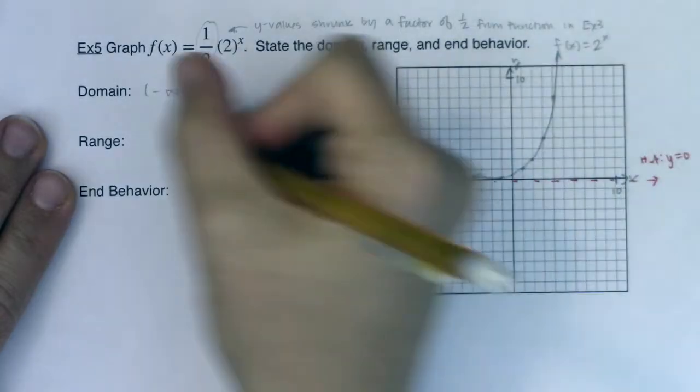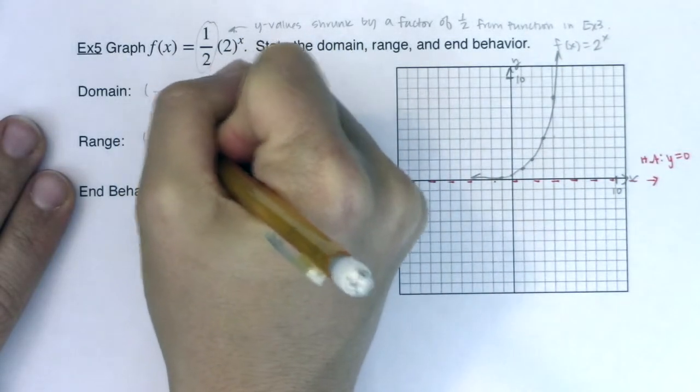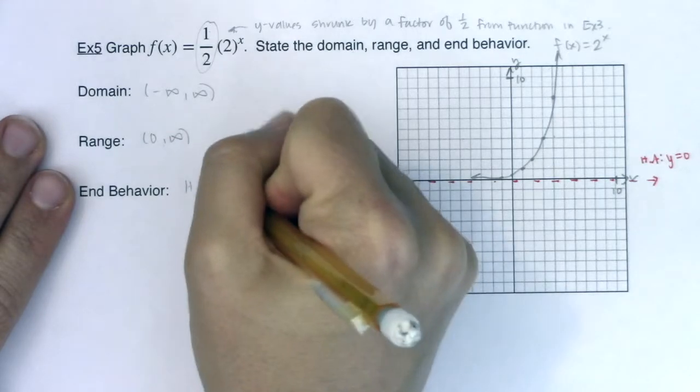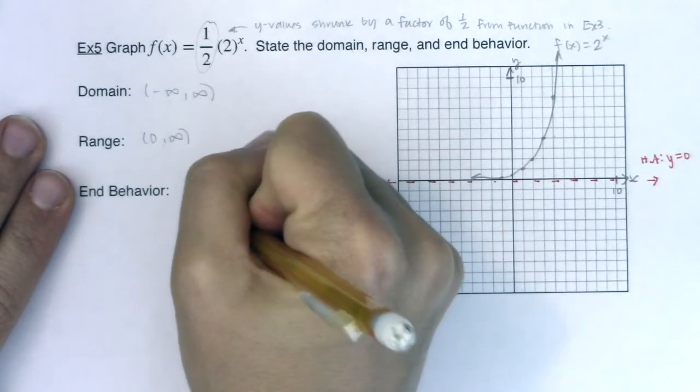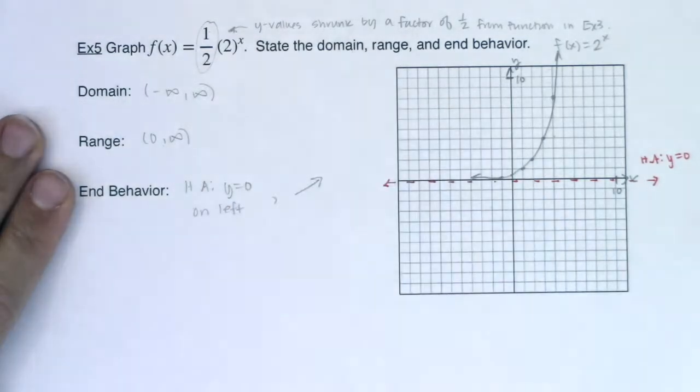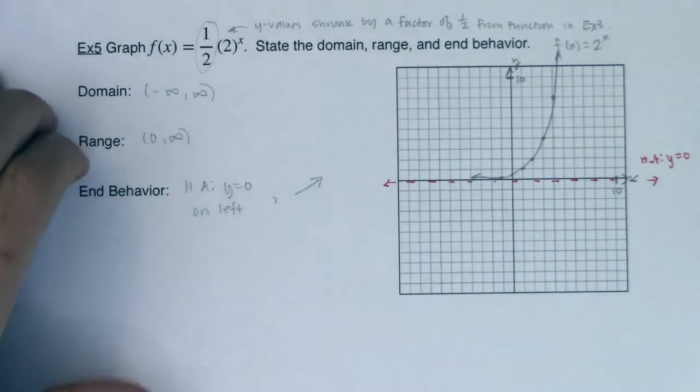My range, it looks like 0 to infinity. My end behavior, I've got that horizontal asymptote. We're back to y equals 0 on the left. And then I've got my right arrow heading up.